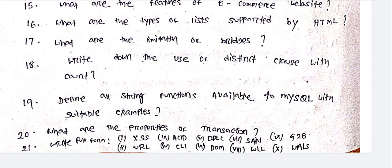What are the properties of transactions? Write the full forms of: XSS, URL, ACID, CLI, DDL, DOM, SAN, WLL, G2V, WAIS.